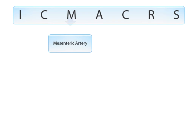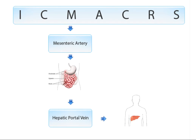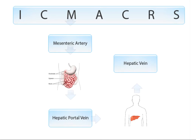M is the mesenteric artery, which branches off the aorta to carry blood to the small intestine. We then have the hepatic portal vein, which carries blood from the small intestine to the liver, followed by the hepatic vein, which carries blood from the liver to the vena cava.